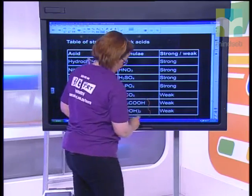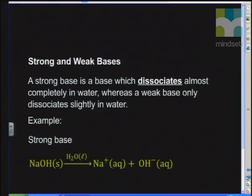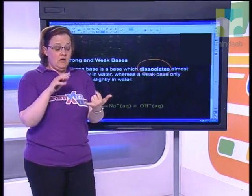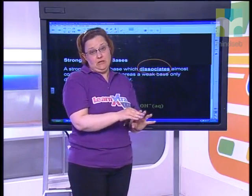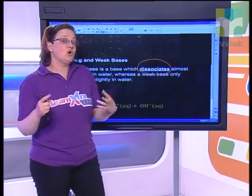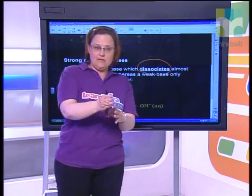That brings us to bases. A base dissociates — with one exception I'll mention shortly. Bases dissociate because they are ionic. Bases are made up of a negative ion — usually OH⁻, but it can also be nitrogen, carbonates, or oxygen — paired with a metal, generally speaking. The exception is ammonia, which is the only covalent base; most other bases are ionic.